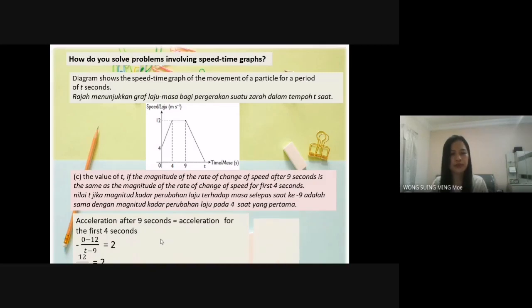So, 12 equal to 2 times T minus 9. I move 2 to the left-hand side. 12 divided by 2 equal to T minus 9. 6 equal to T minus 9. T equal to 15.